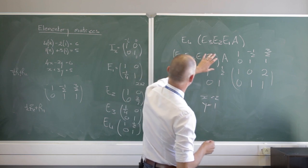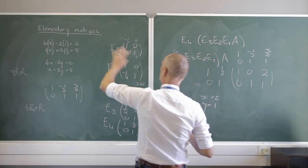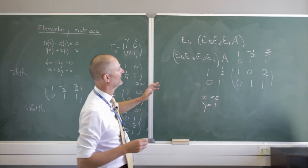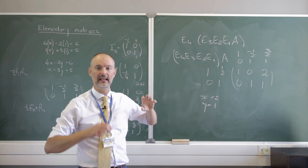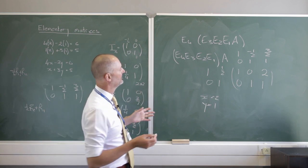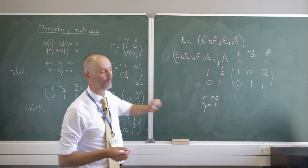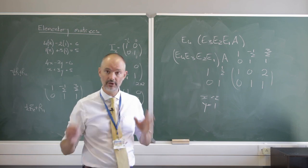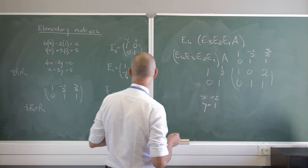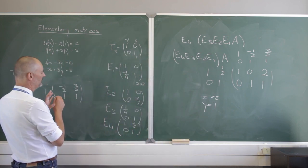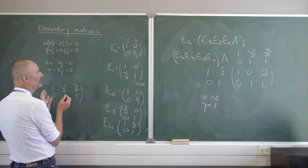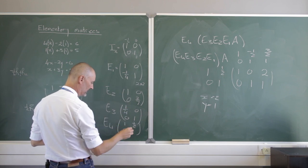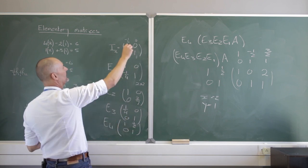These elementary matrices are important: we've seen they're useful for solving systems of linear equations, and they're also important for LU decomposition — lower upper triangular decomposition — which is used for solving systems, finding inverses, and computing determinants. It's intuitive: the elementary row operation we want to do is exactly what we do to the identity matrix.